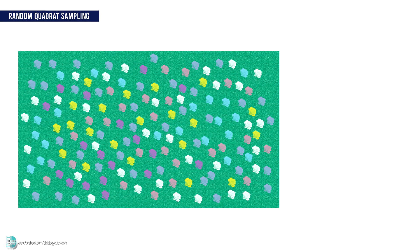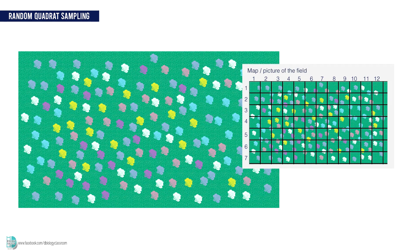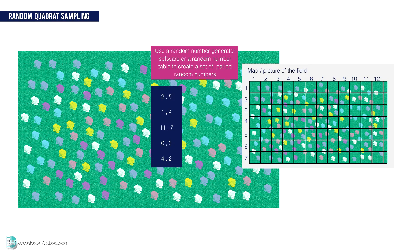In random quadrat sampling, you need to map the area of interest or take a picture from the aerial view. Then lay a number grid over the map. Use a random number generator software or a random number table to create a set of paired random numbers.